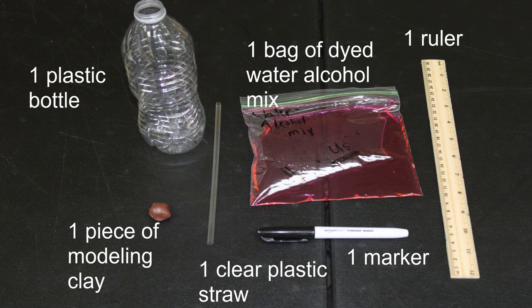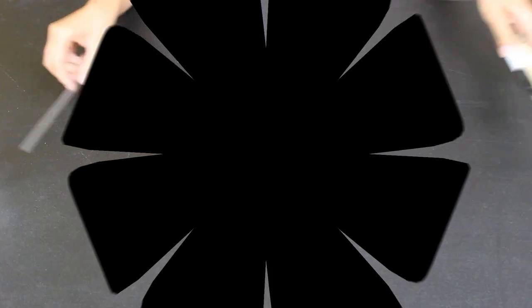For this activity you'll need one ruler, one marker, one clear plastic straw, one piece of modeling clay, one bag of a dyed water alcohol mix, and one plastic water bottle. We've provided all these materials for you except for the water bottle. You'll need to get that yourself.